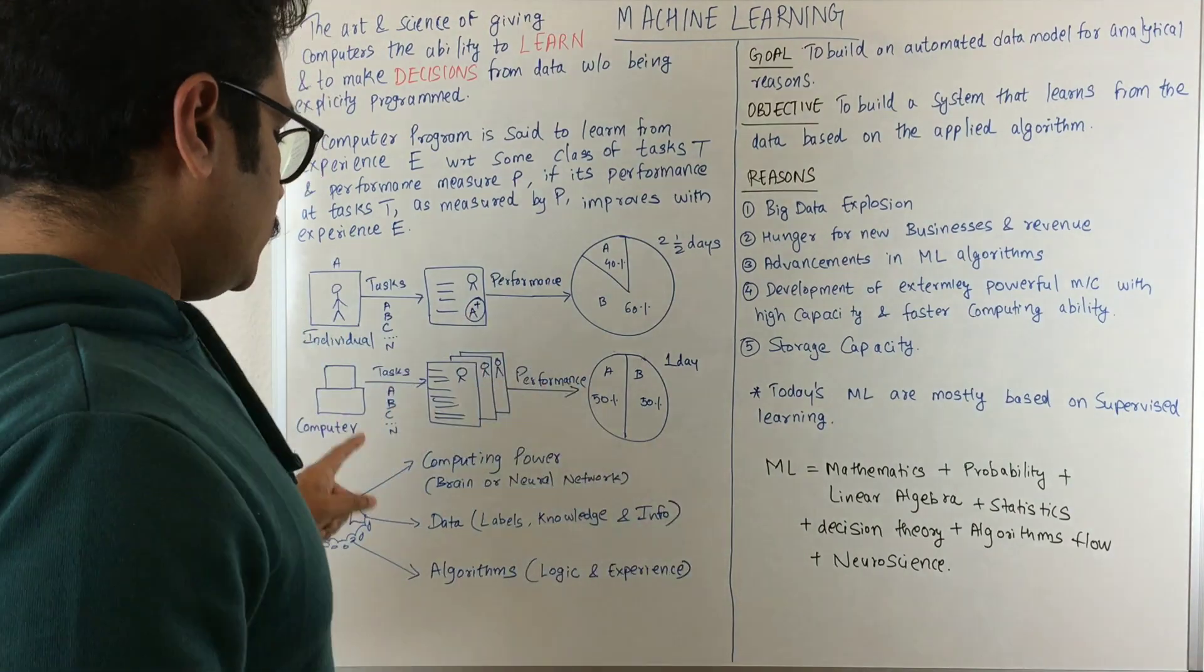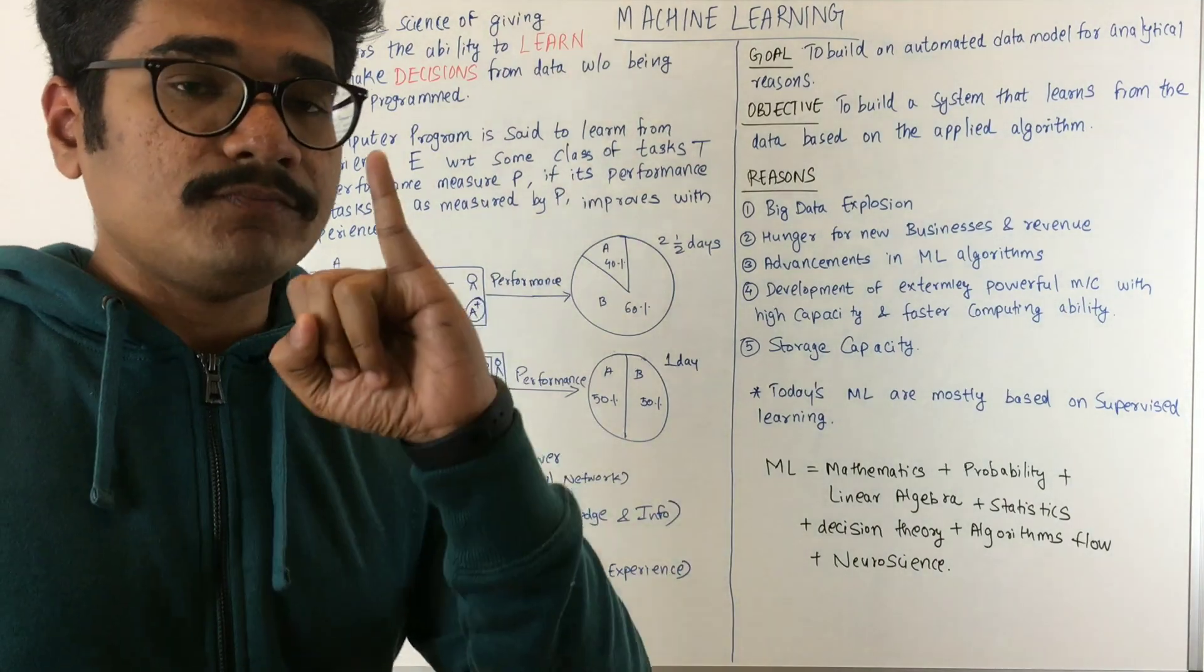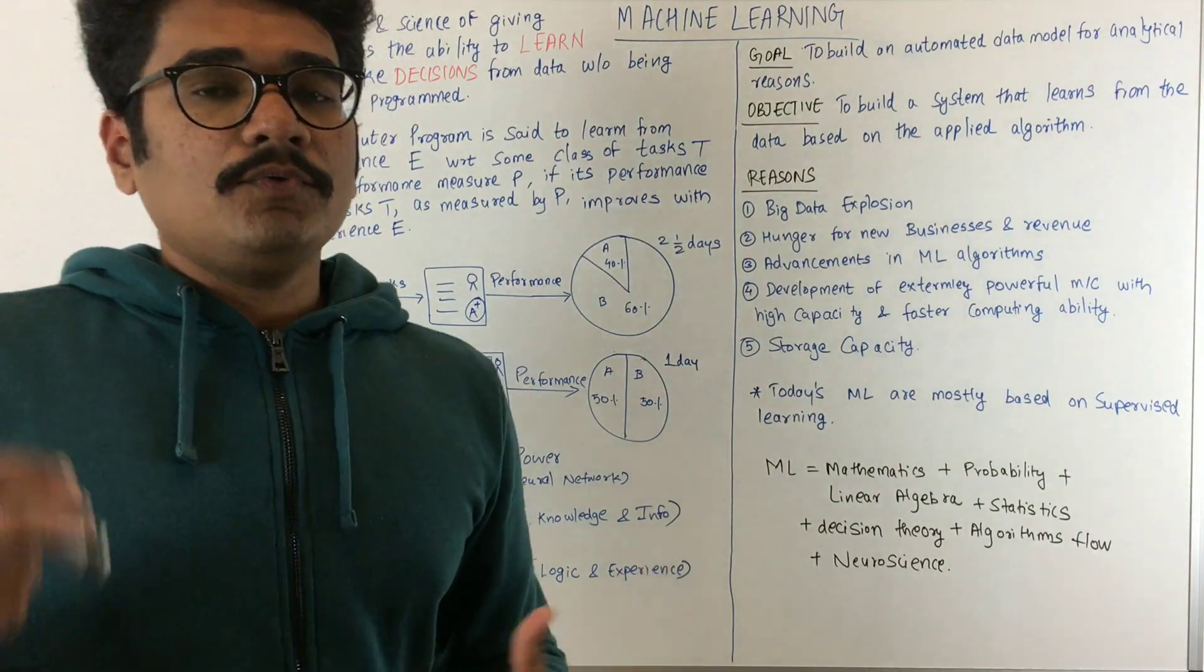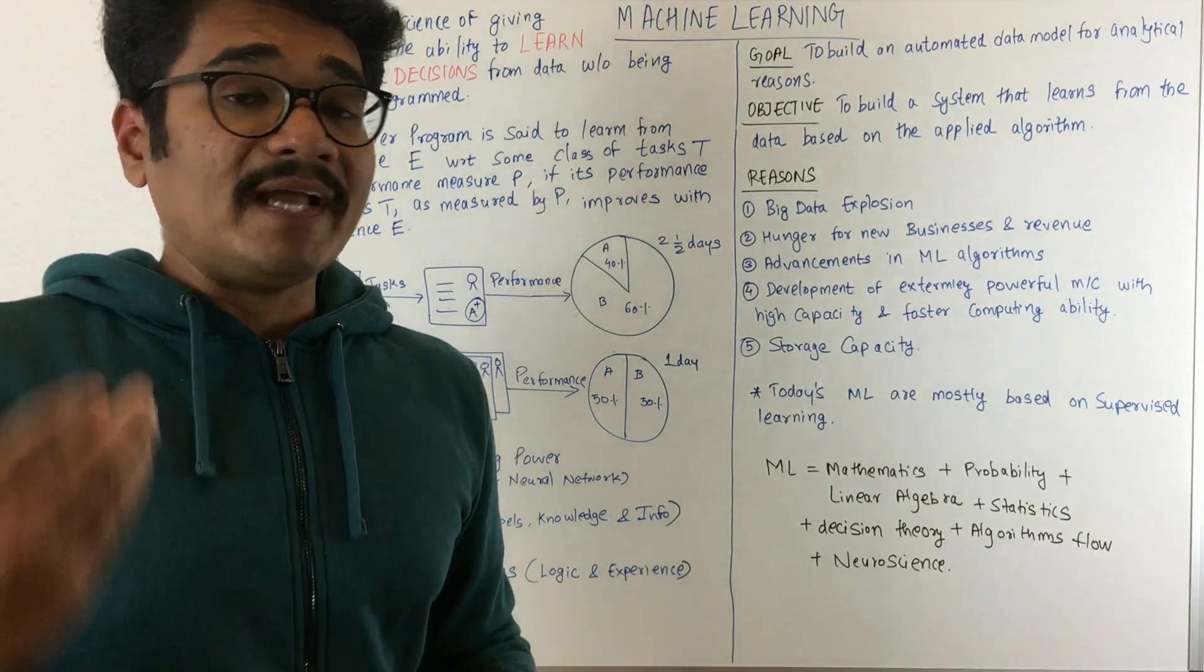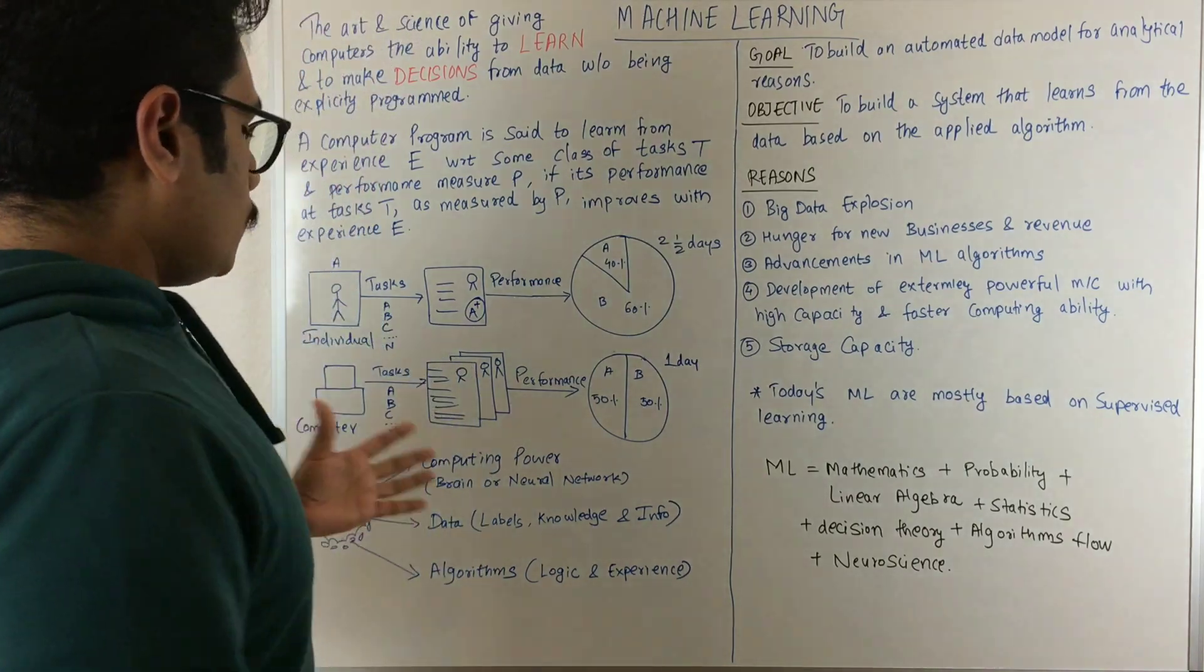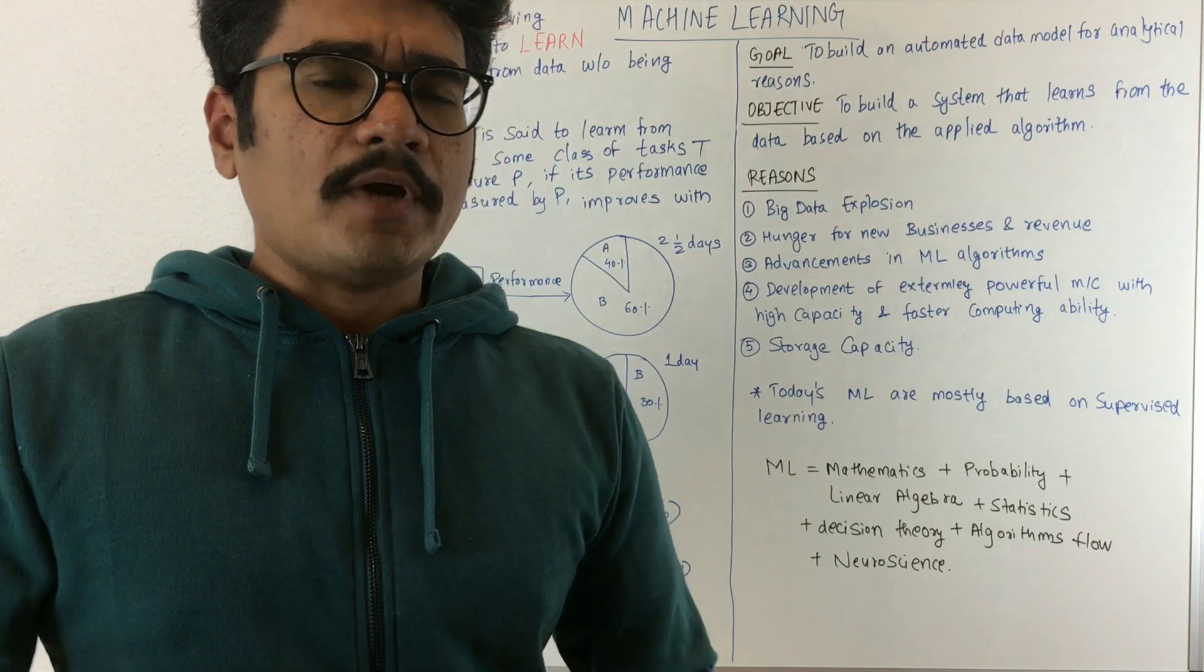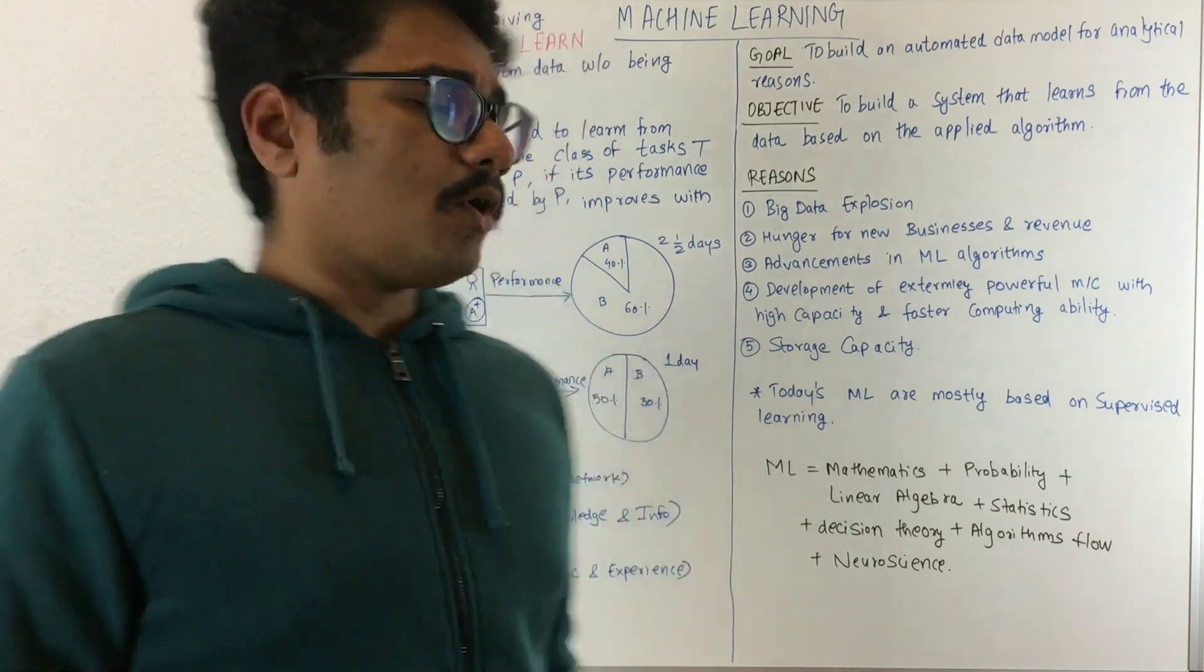First, you should have computing power—the brain or neural networks where you'd be operating and making decisions. For that, you need high CPU and high configuration machines to work on this.